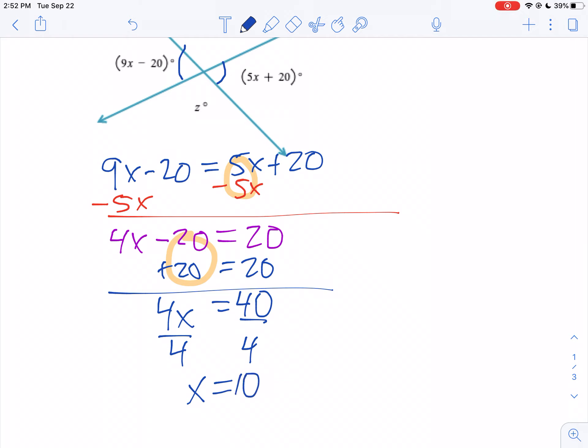Now we have to find Z. What we're going to do is replace X with 10 to find the measure of these angles. 5 times 10 is 50. 50 plus 20 is 70. So this angle is 70 degrees. By the way, so is this.